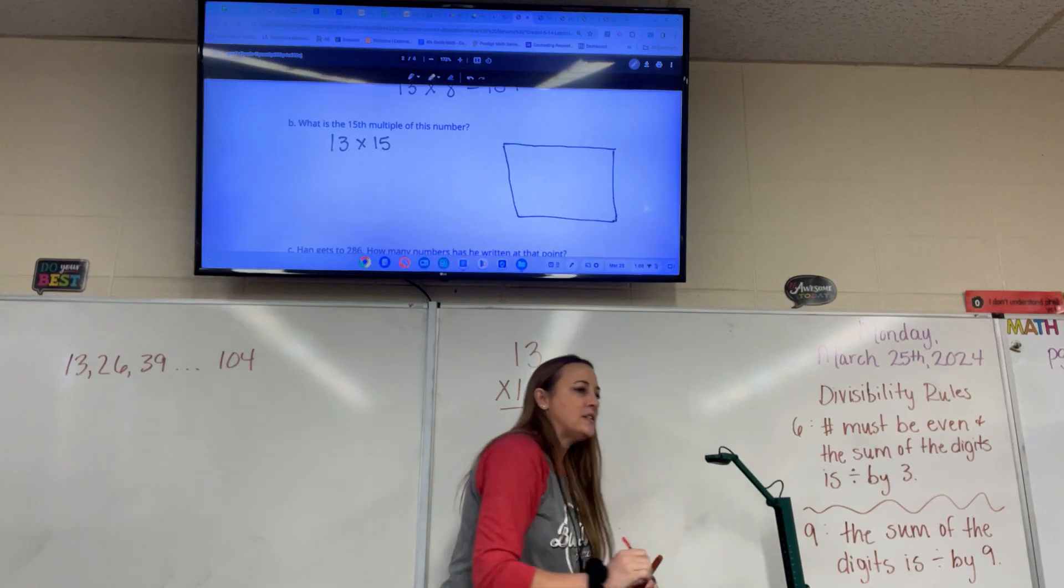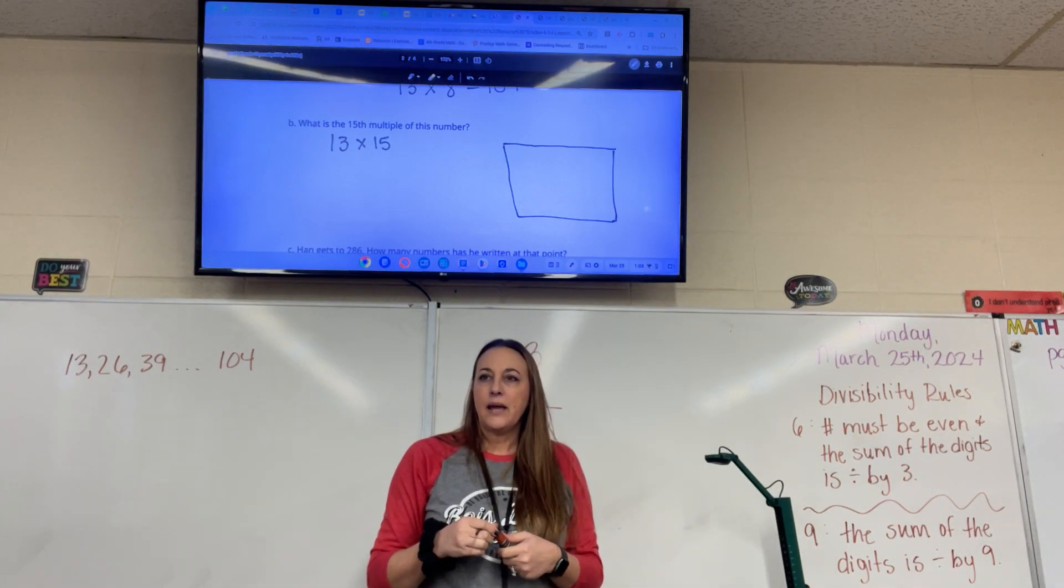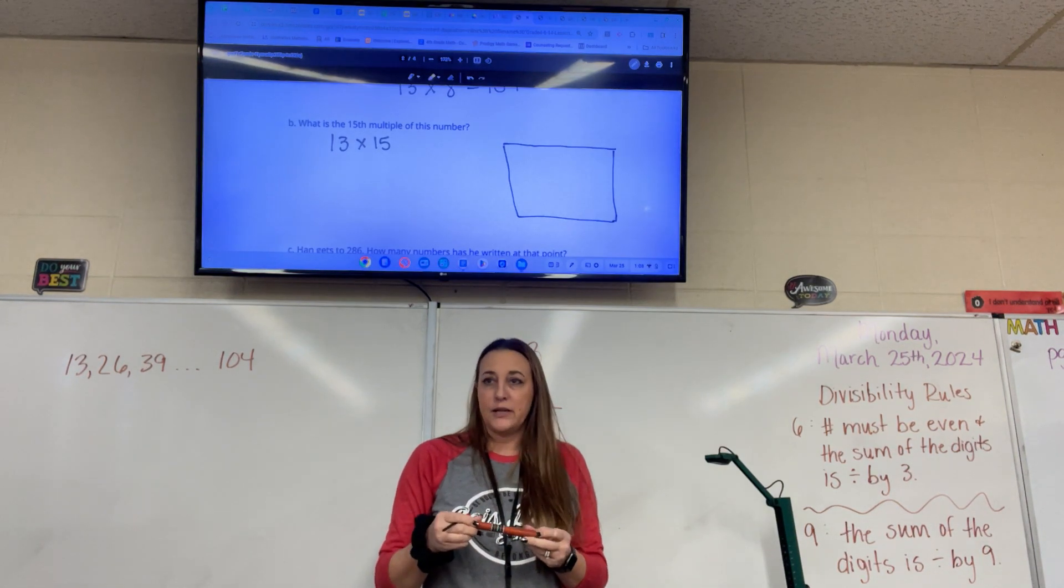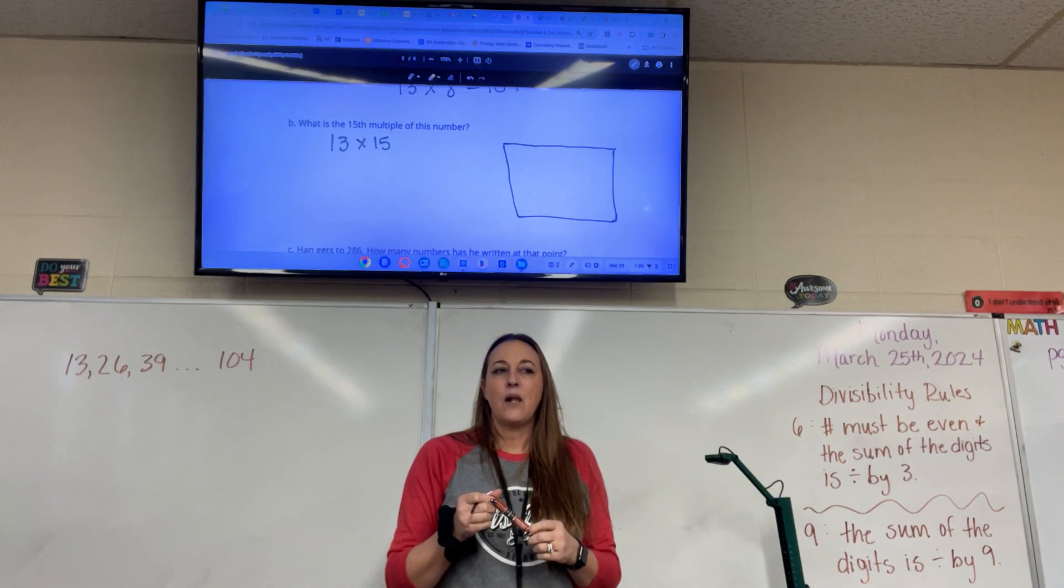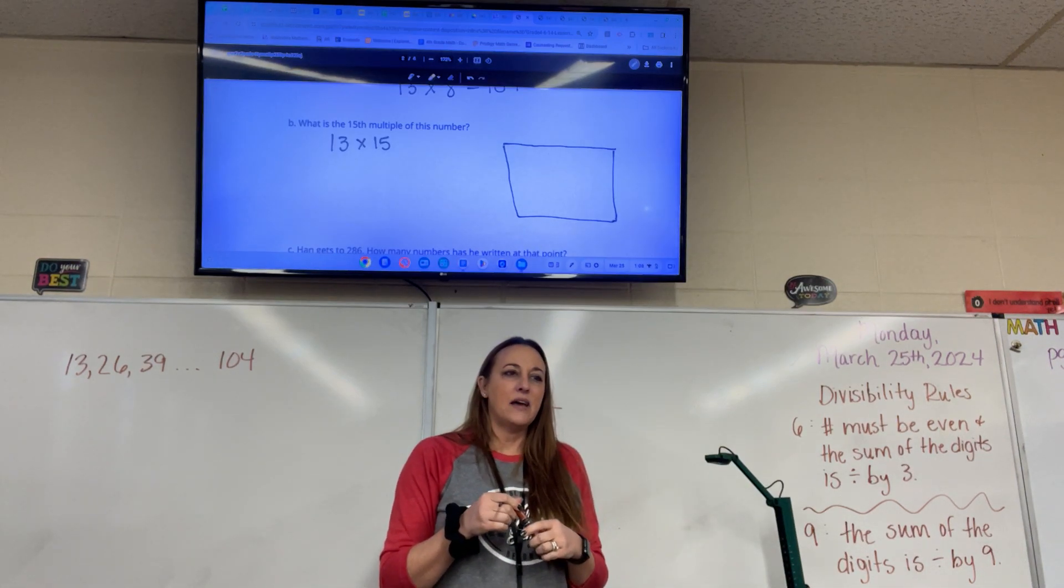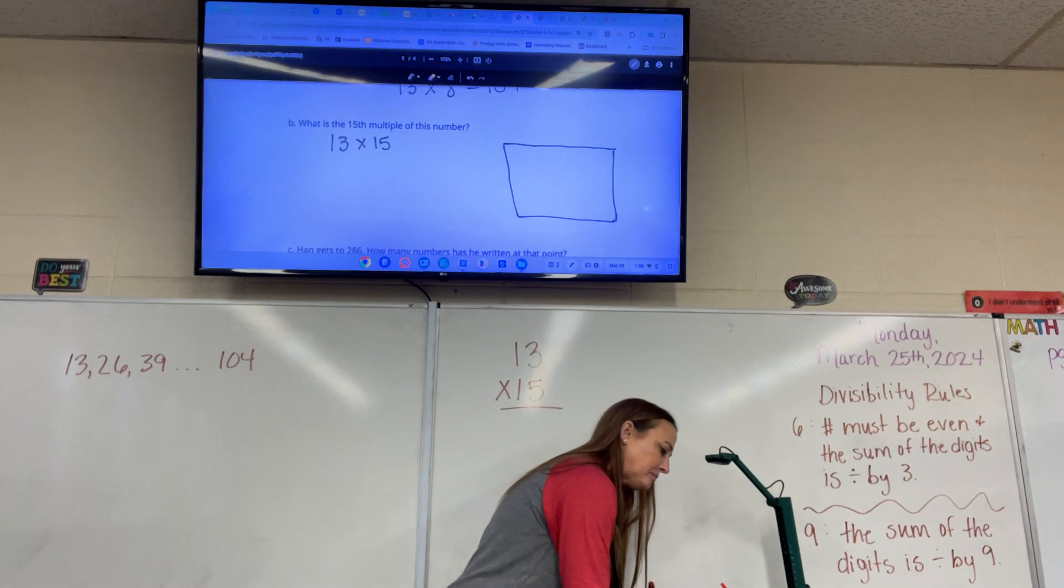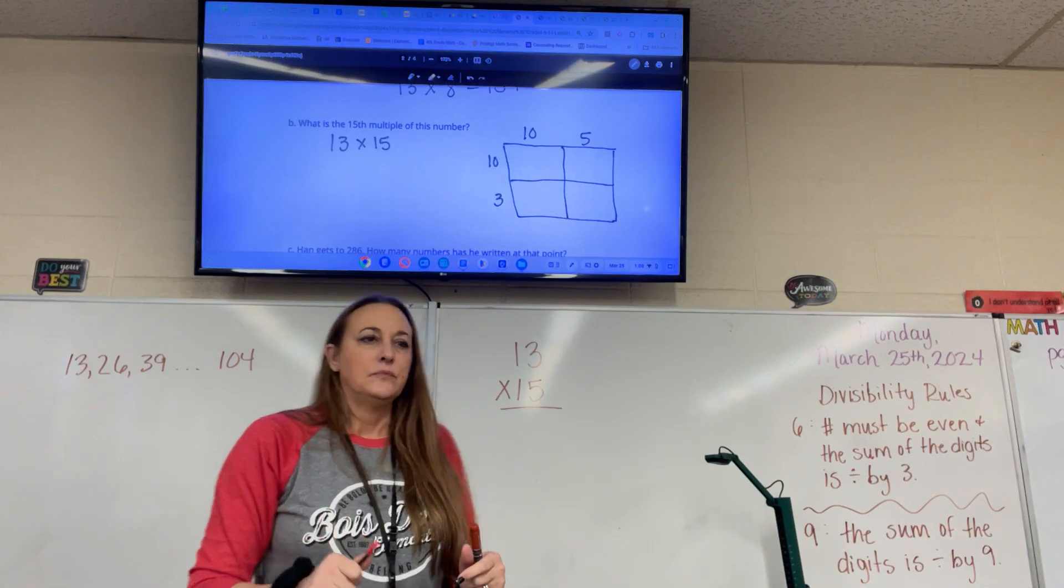Nope. Caitlin, what answer were you going to say? Really? One. Olivia? Three. Nope. Emma? Four. Thirteen becomes ten and three, and 15 becomes ten and five. Remember that? Okay.